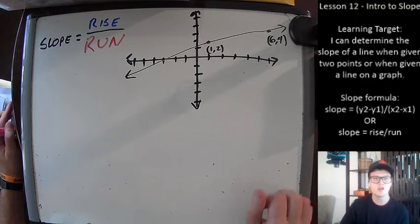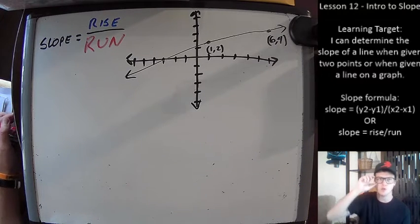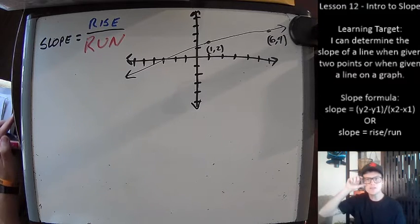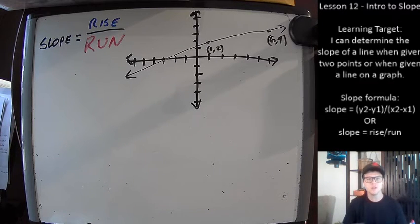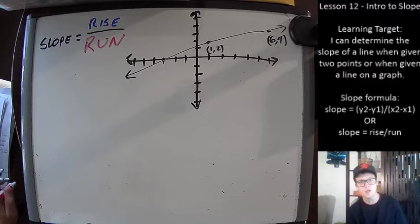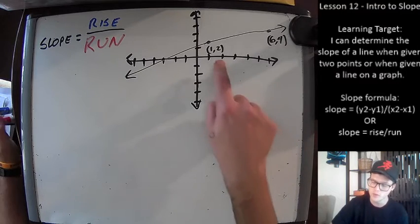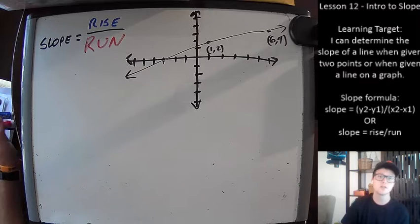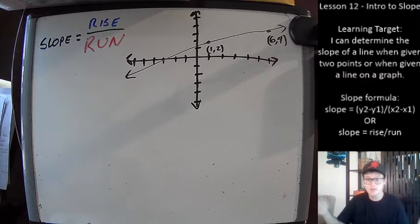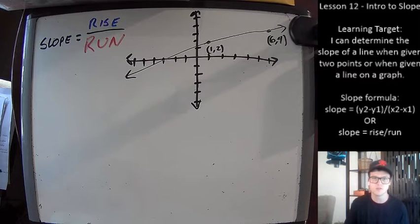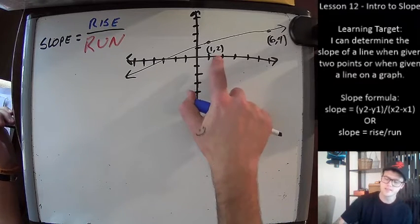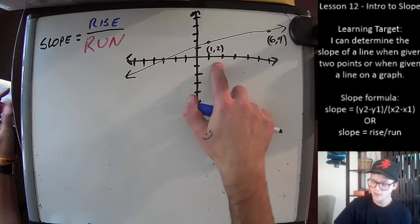This formula — rise over run — is something you see and hear a lot when talking about slope. It's a nice clean way to remember how to find slope. To find the slope between (1, 2) and (6, 4) using rise over run: we're going to start with the point furthest to the left — the one with the smallest x value — and work our way over to the point on the right.